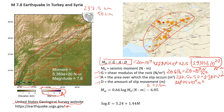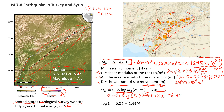Once we know the seismic moment, we can estimate the magnitude of the earthquake using this empirical correlation. We calculate: 0.66 times log of the seismic moment (5.9375 times 10 to the 20), minus 6.05. The result gives a magnitude of 7.66. The magnitude estimated by USGS is 7.8, which is again very close.